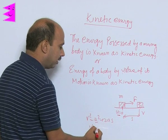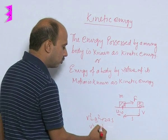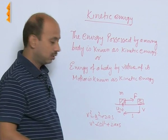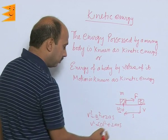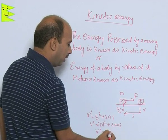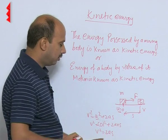So we can write v square is equal to 0 square plus twice of a into s. So we can write here v square is equal to 2 a s. This is the velocity.